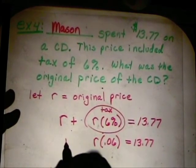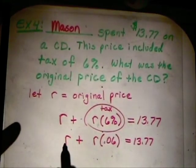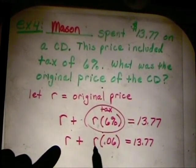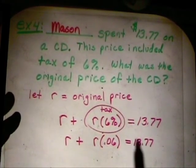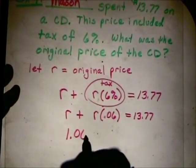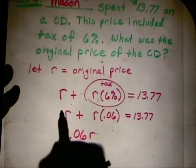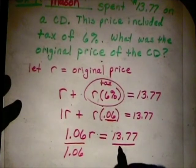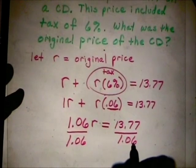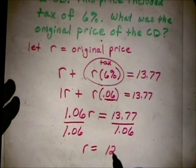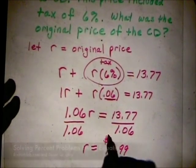We have the original price plus the amount of tax. One whole original price plus six pennies on the dollar for every dollar of the original price. So one plus .06, if we add like terms here, we will get 1.06 R equals $13.77. Divide both sides by 1.06.